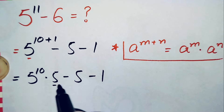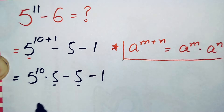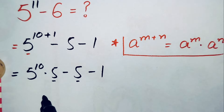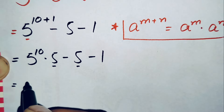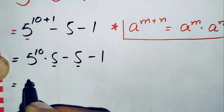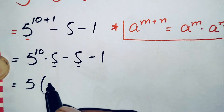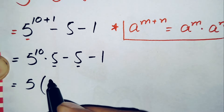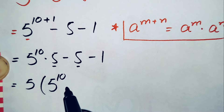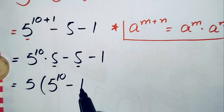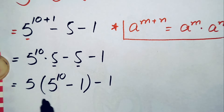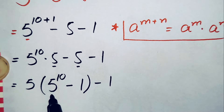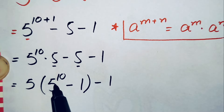Now in these two terms, 5 is common, so we will take it out as a common factor. This equation becomes 5 times the quantity 5 raised to power 10 minus 1, with the remaining terms outside.